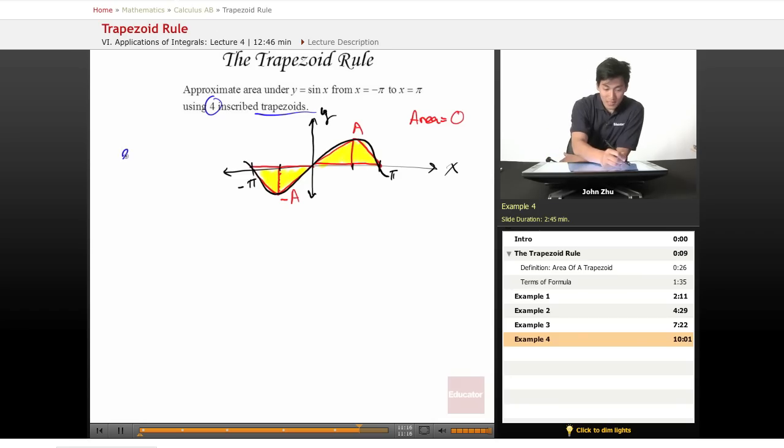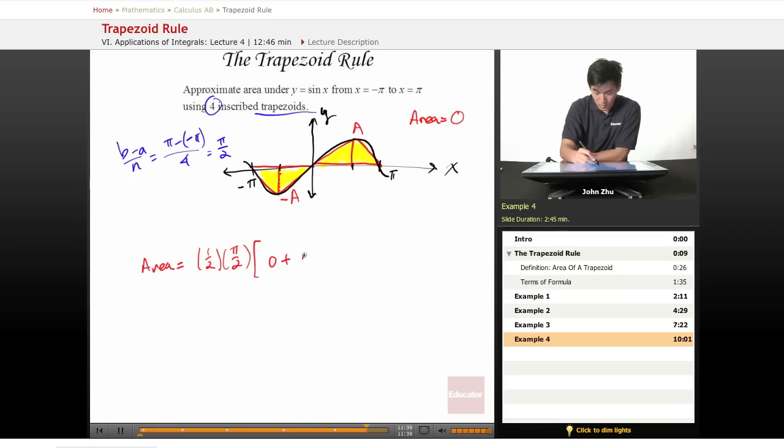So b minus a over n equals pi minus negative pi over 4, which is pi over 2. So then our area will equal one-half pi over 2, which we got from here, times zero plus two times negative one plus two times zero plus two times one plus zero.